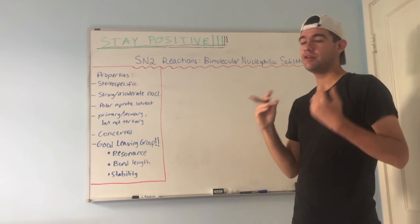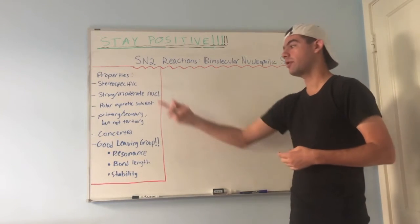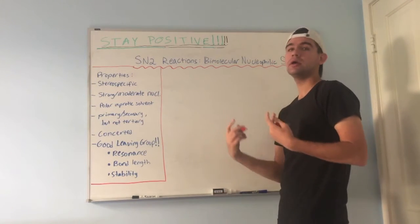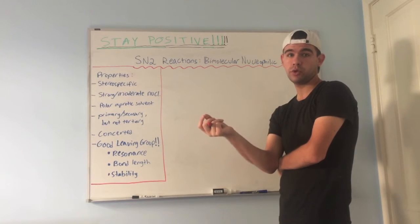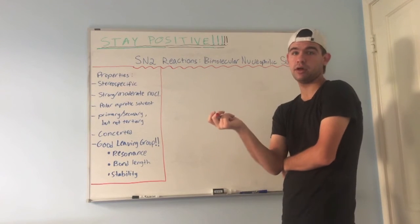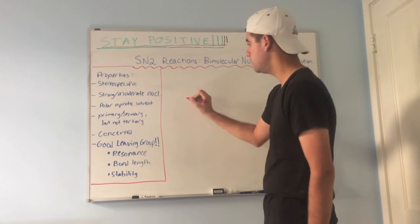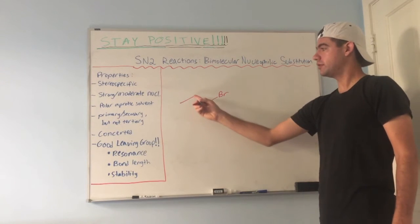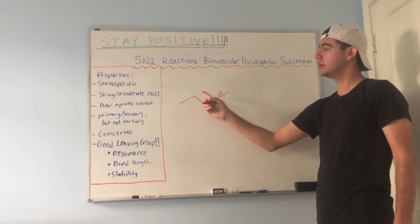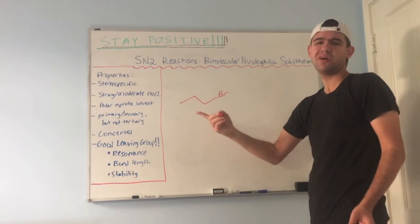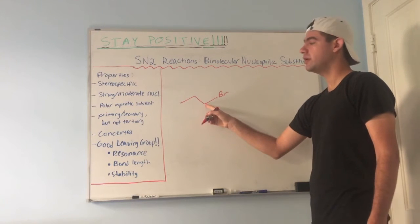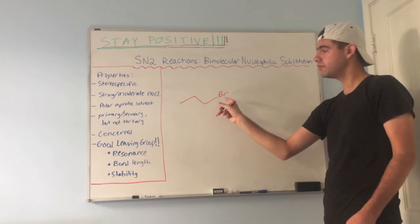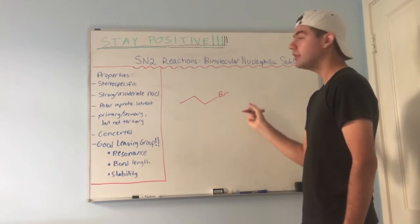Let's look at the very basic mechanism behind SN2. Take any molecule with an electrophile and a leaving group — something that can leave and be stable on its own. Let's look at an alkyl halide. If I point to a carbon that's only part of non-polar bonds, it's not an electrophile — no partial charges. But the carbon attached to bromine is partially positive, because bromine is partially negative due to the electronegativity difference.